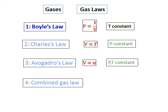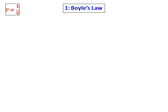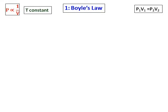Now we are going to focus only on Boyle's law. Boyle's law states that pressure is inversely proportional to volume when the temperature is constant. Boyle's law is usually represented as P1V1 = P2V2.